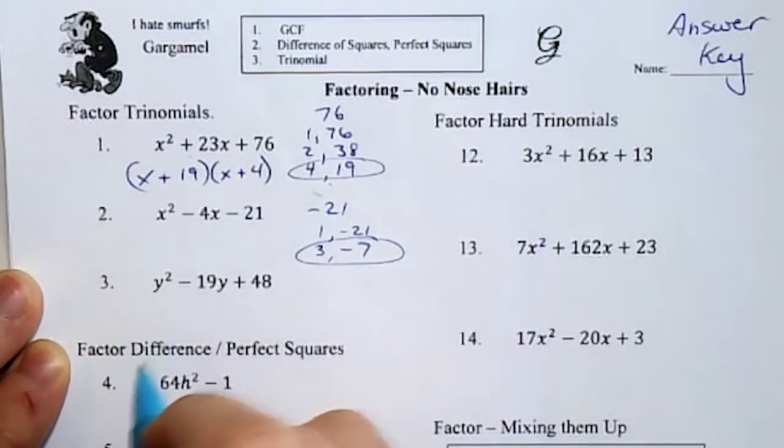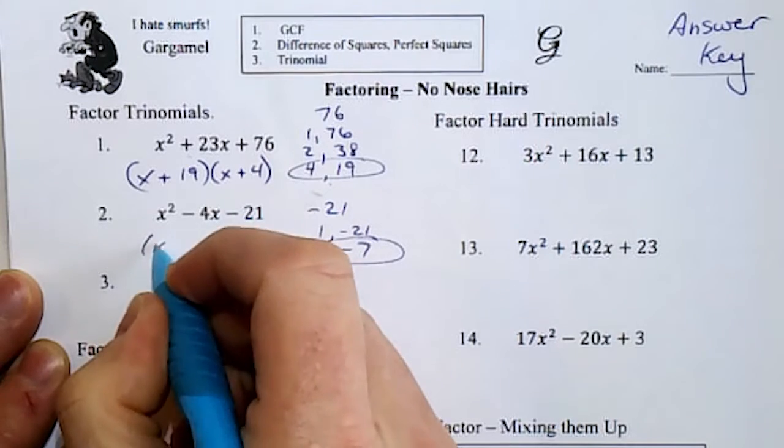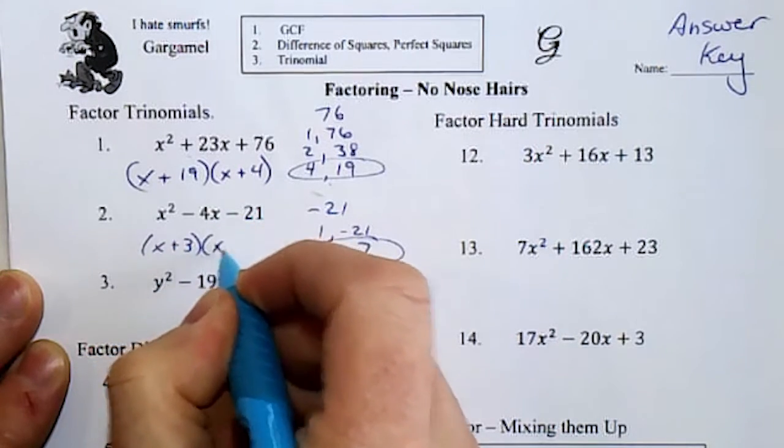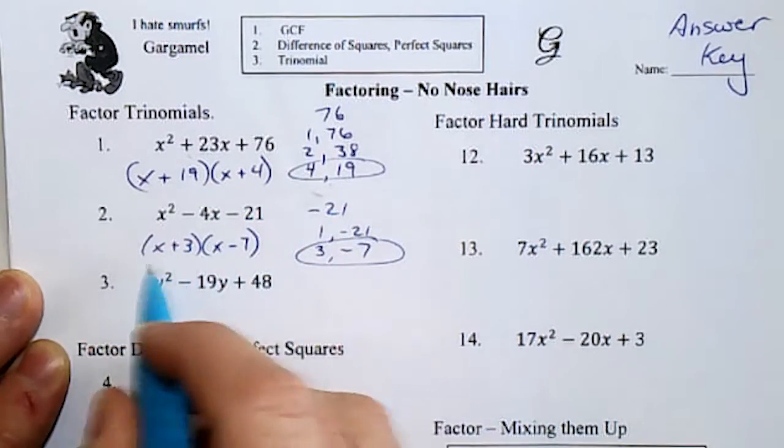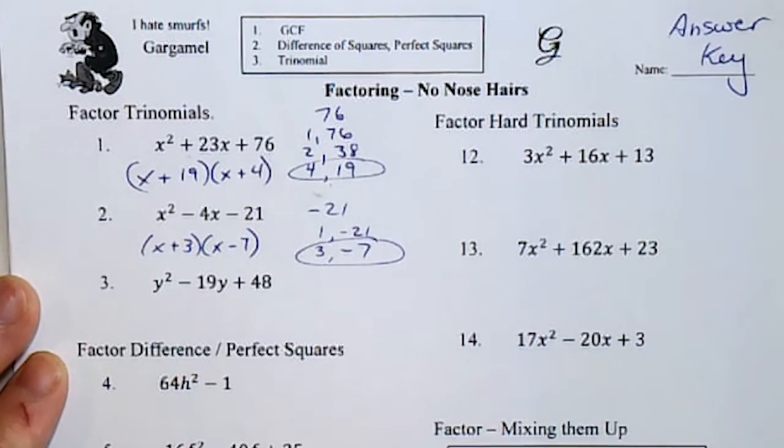Negative 4, 3, and negative 7. Doesn't matter which one goes first, as long as you have both of them in brackets.